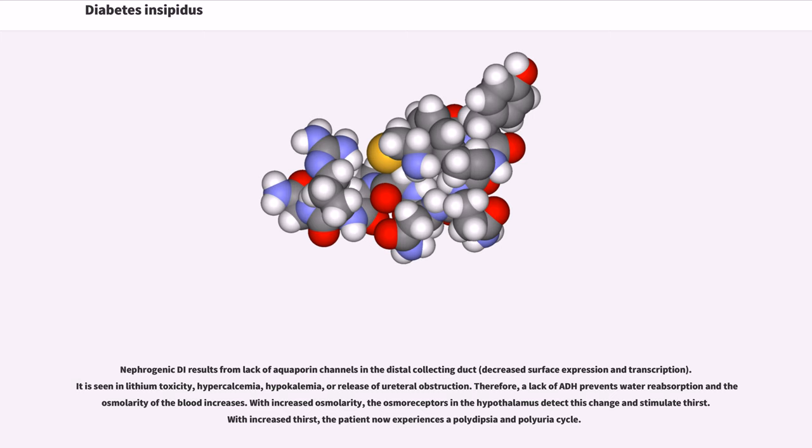Nephrogenic DI results from lack of aquaporin channels in the distal collecting duct. It is seen in lithium toxicity, hypercalcemia, hypokalemia, or release of ureteral obstruction. Therefore, a lack of ADH prevents water reabsorption and the osmolarity of the blood increases. With increased osmolarity, the osmoreceptors in the hypothalamus detect this change and stimulate thirst. With increased thirst, the patient now experiences a polydipsia and polyurea cycle.